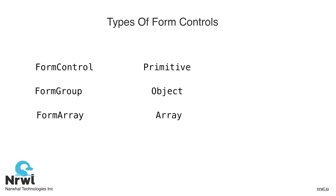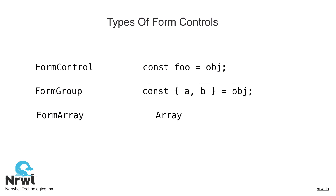There's also a strong correlation between the different types of form controls and destructured declarations. A form control, for example, is like a straightforward declaration — we can declare either a primitive, an array, or an object and assign it to a declared variable. A form group is then like a destructured declaration of an object and its properties, where each property is explicitly named. A form array is like a destructured declaration of an array, where the declaration is an array of contents, each of which could itself be a primitive, an object, or an array.